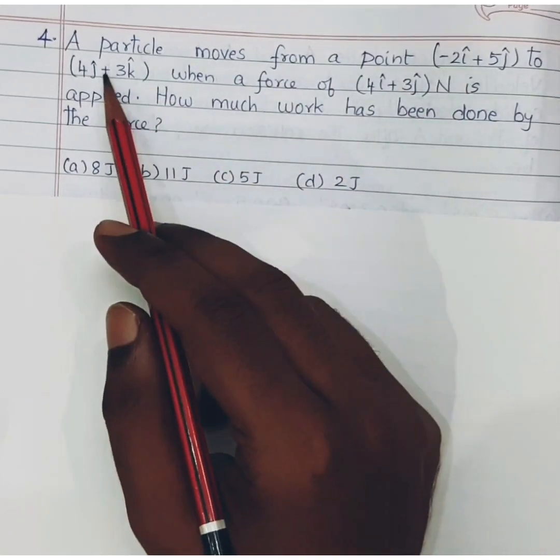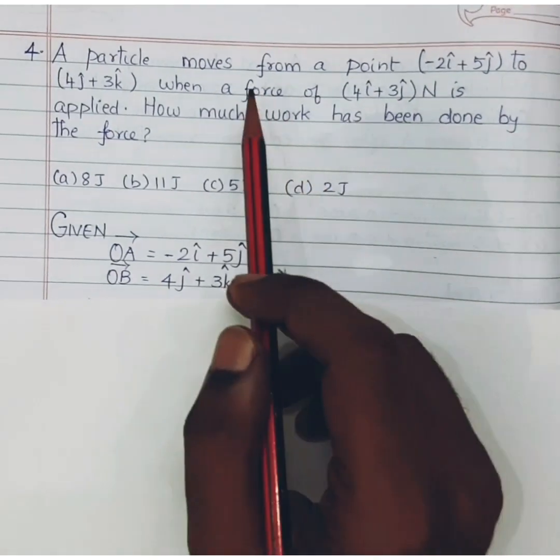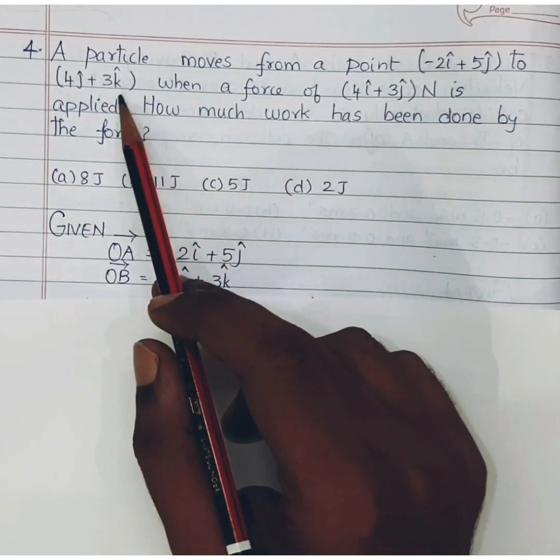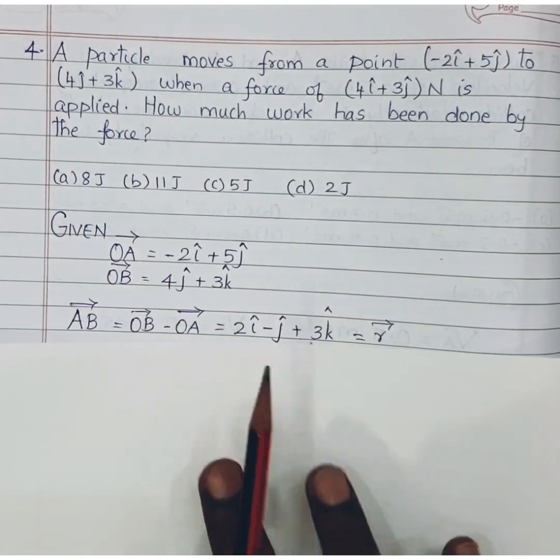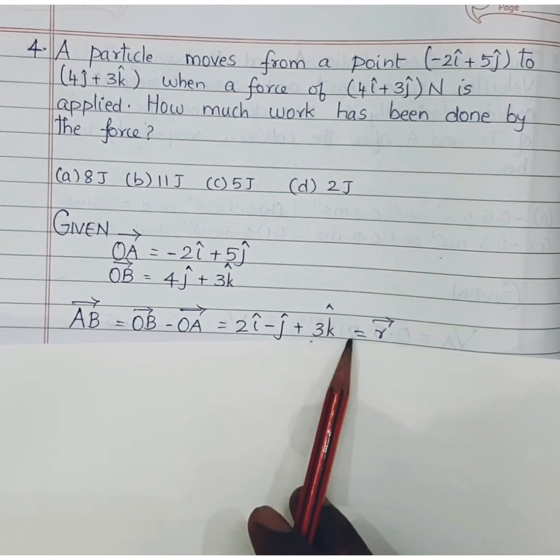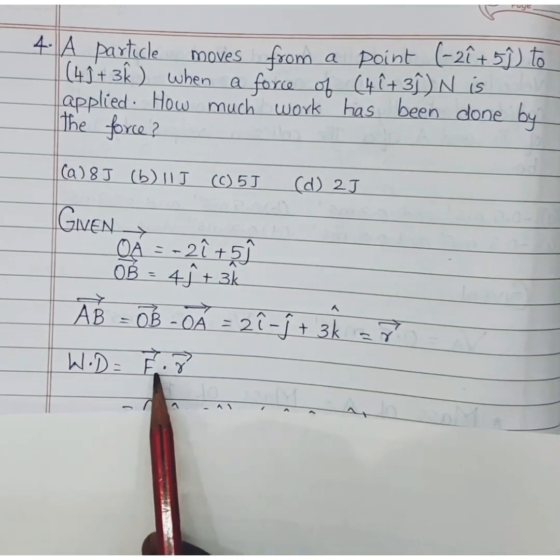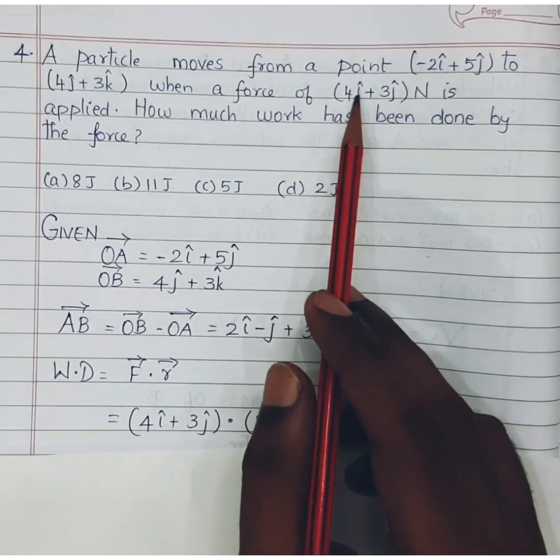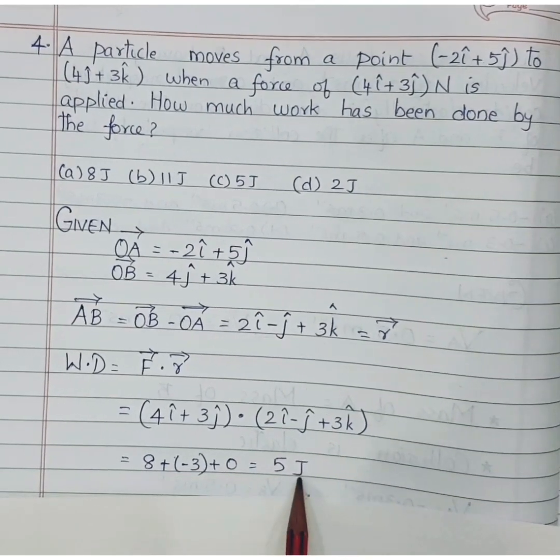So force vector is given but displacement vector is not given, instead two points have been given. Let this point be A and this point be B, so we have OA vector and OB vector. Now the particle moves from point A to point B so we want to find AB vector. So AB vector is nothing but OB minus OA, so I will be getting 2i minus j cap plus 3k cap. Let us assume that to be r vector. So we know that work done is nothing but F dot r. So find the dot product of F vector and r vector, so I will be getting 5J as the answer.